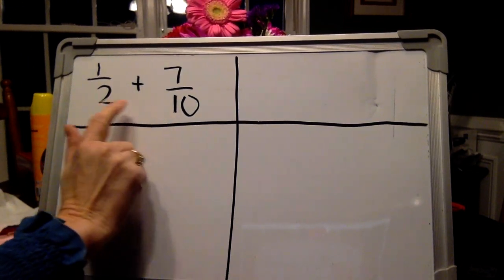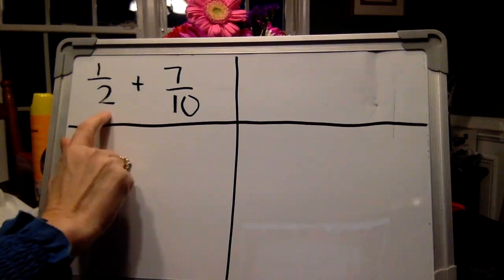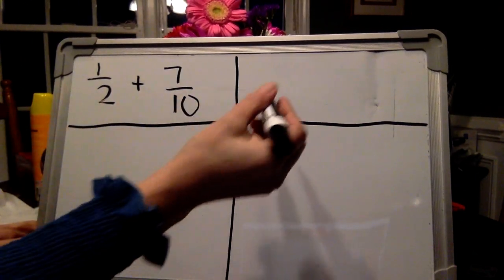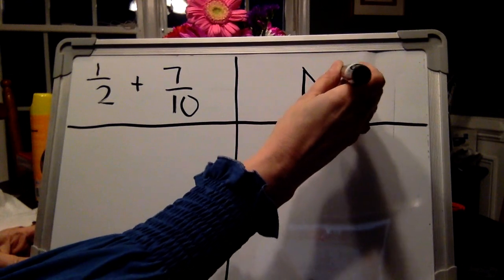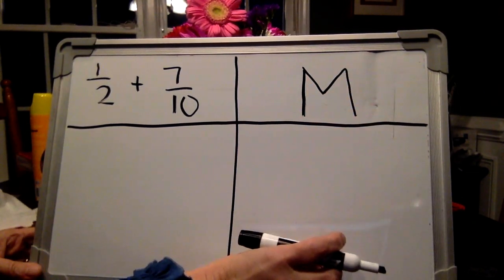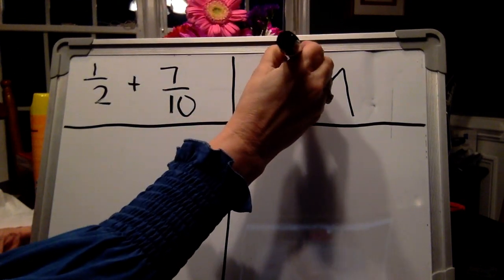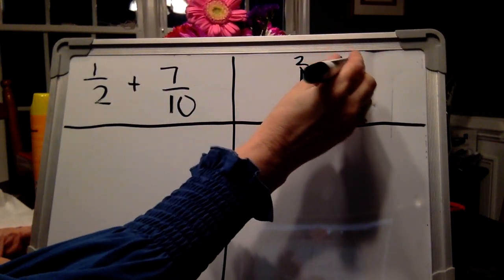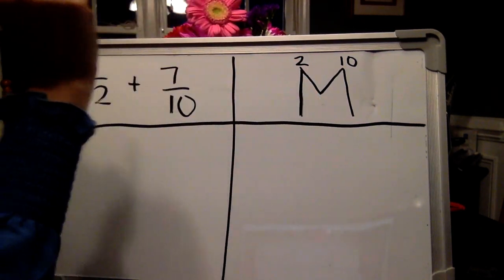Remember, we can't add these denominators because they're different, so we have to find a way to make them the same. So we are going to find the least common multiple of those two numbers. So you make your M. Let's find multiples, which is skip counting.